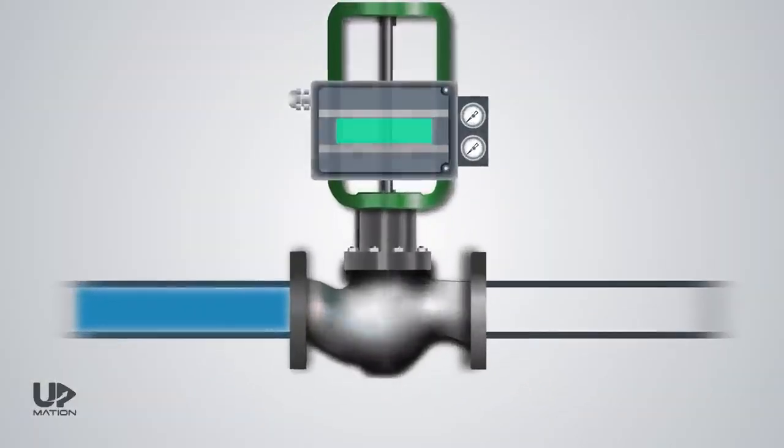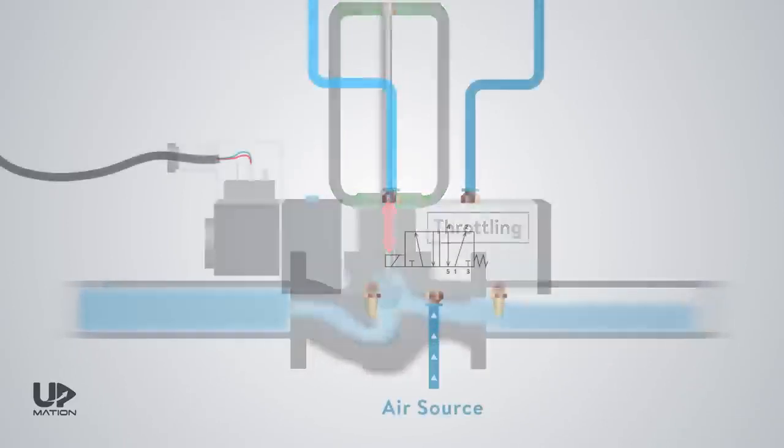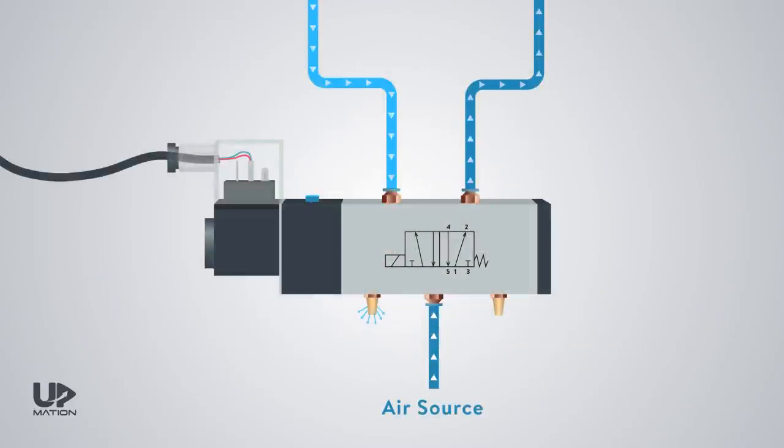Control valves are mostly known by their adjustability and throttling capabilities. But the valves we are going to talk about are the types that control the direction of the liquid flowing inside the pipe.